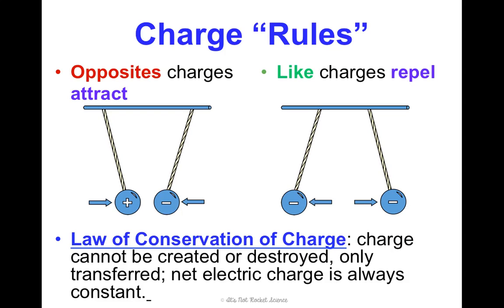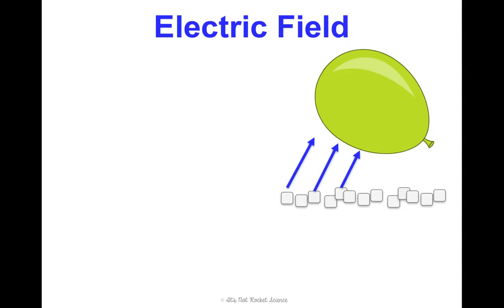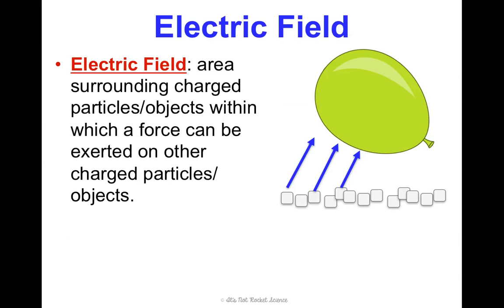Similar to other laws of conservation of momentum and energy that we've learned, we're not creating or destroying negative or positive charges — we're only having charge be transferred. Something really important to understand about objects that have an electric charge is the electric field they can give off. This is an area that surrounds charged particles or objects within which a force — going back to our force unit — can actually be exerted on other charged particles or objects.